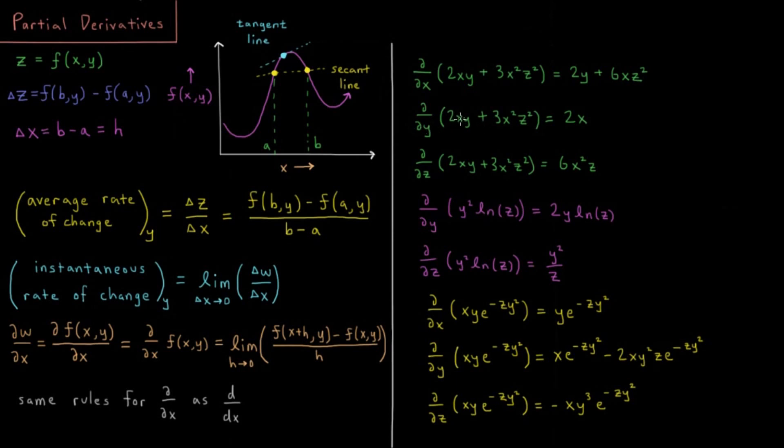Or we could take the partial derivative with respect to y. Now x is constant and we're differentiating y. Linear in y leaves us with 2x, and there's no y in the second term at all, so that entire term gives a derivative of zero.